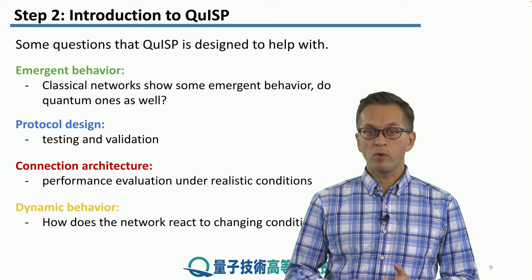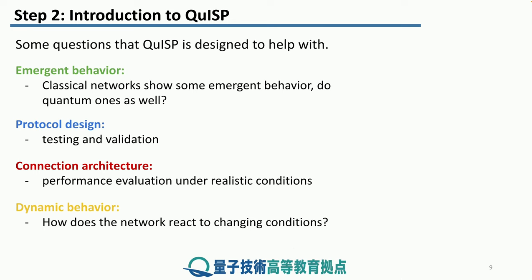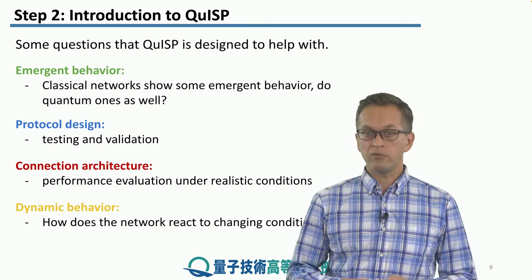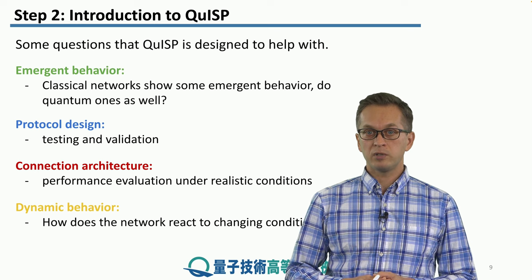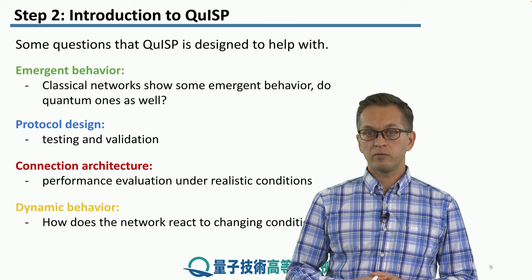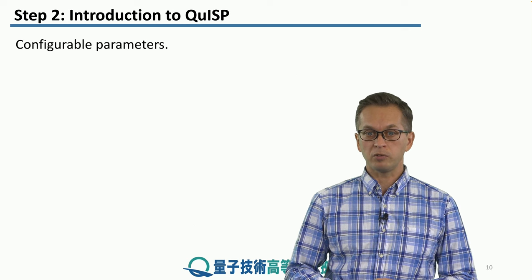We are also interested in dynamical behavior. Quantum networks are not static objects. Things can change. Nodes can go offline. Links can get broken. How does the network deal with such dynamical behavior? That can really be answered fully only with QISP, or a simulation of quantum networks.